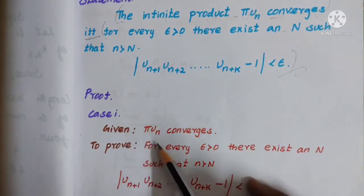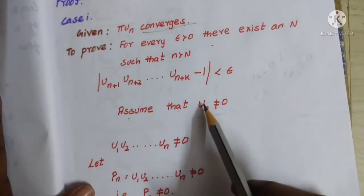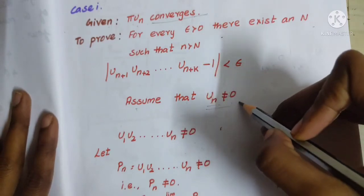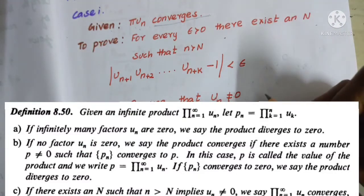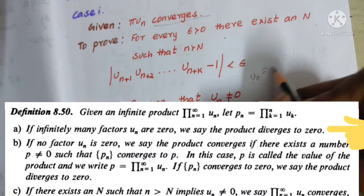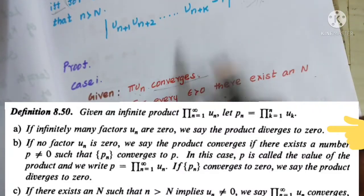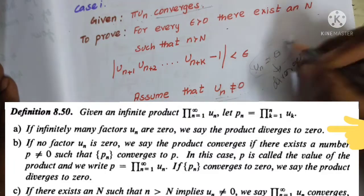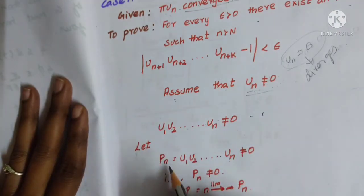Now let's take a proof. Given: pi of Un converges. Assume that Un is not equal to zero. Why Un not equal to zero? Because pi of Un converges is given. By the definition, if infinitely many factors of Un are zero, the product diverges. So Un equal to zero implies divergence; therefore Un is not equal to zero.